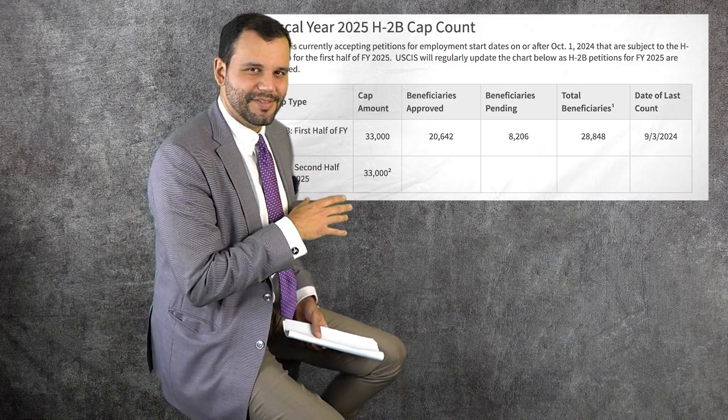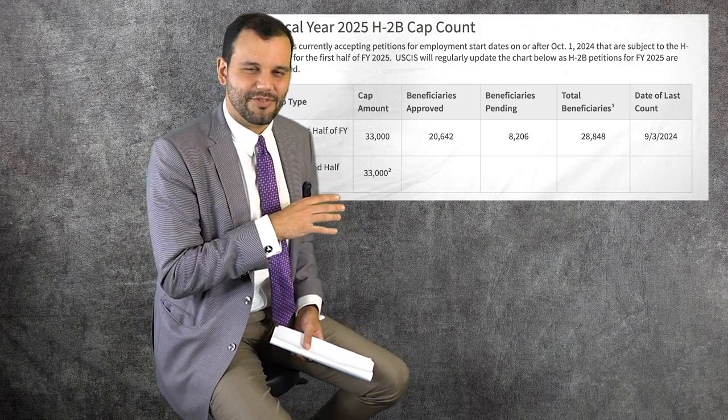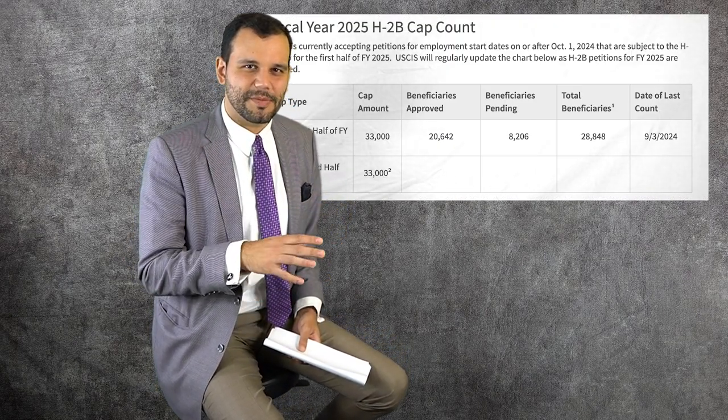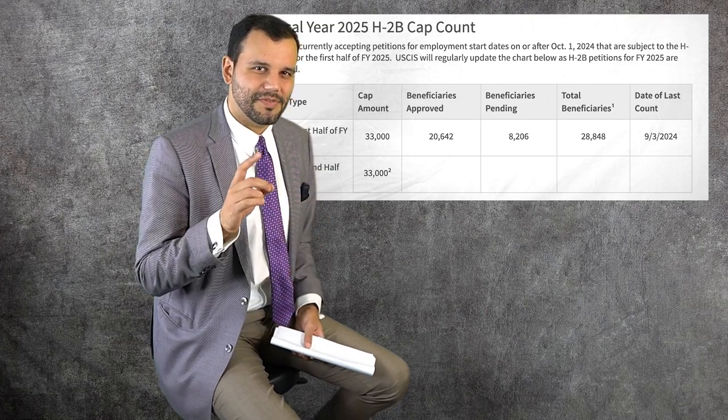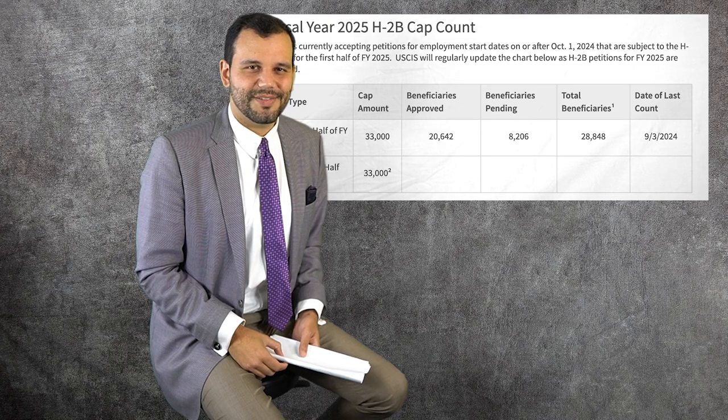So if we're looking at the USCIS application count, which was put out on September 3rd, 2024, you can see that we have just a little over 28,000 applications as of September 3rd that are in the hands of USCIS.